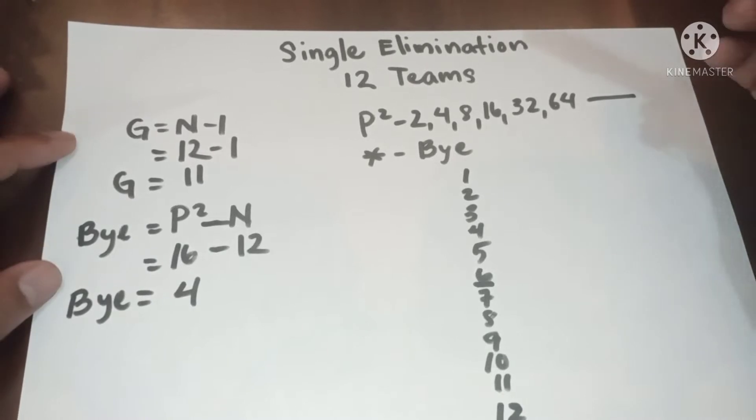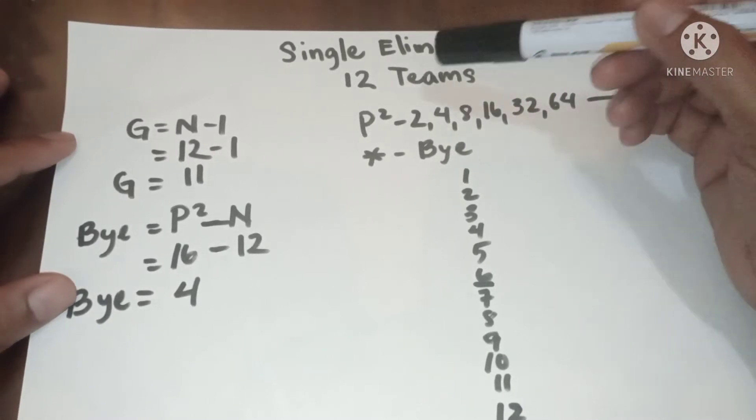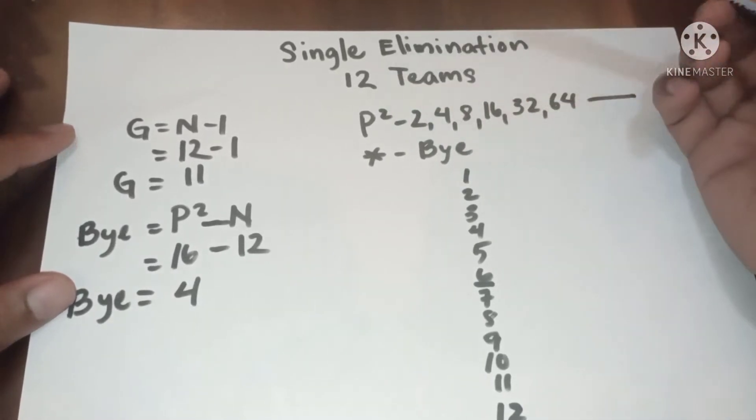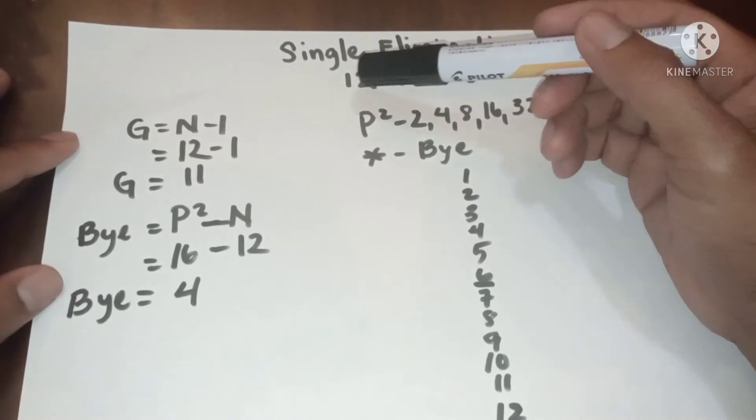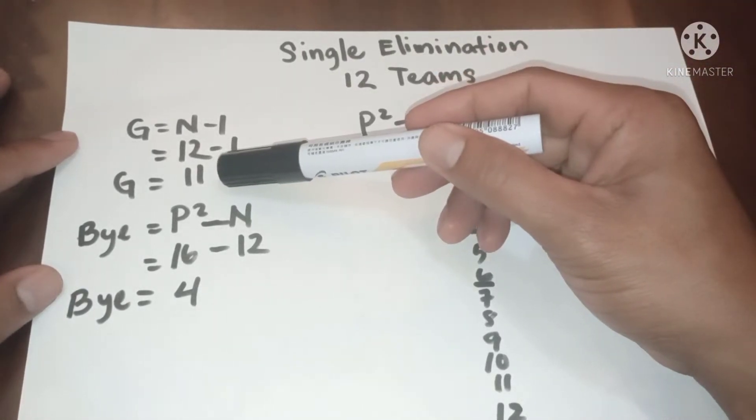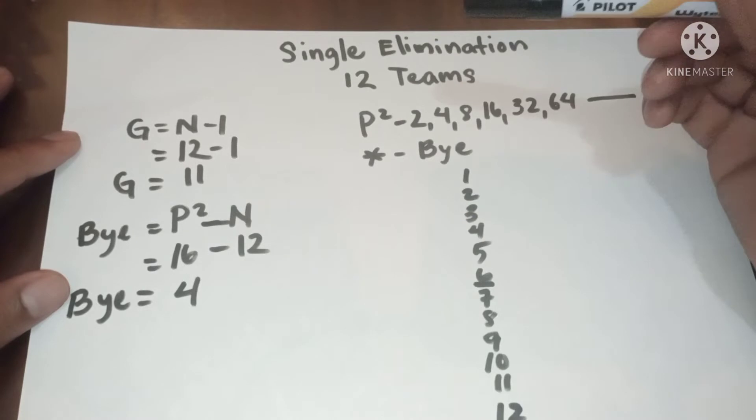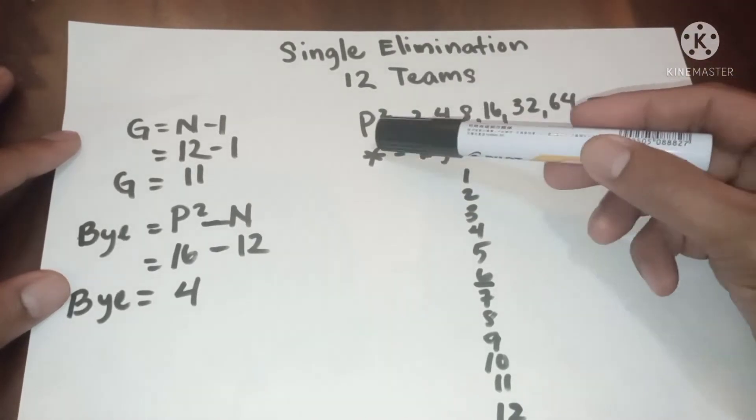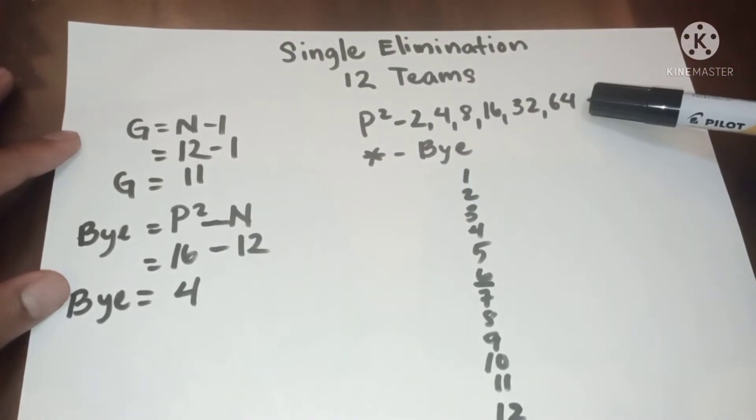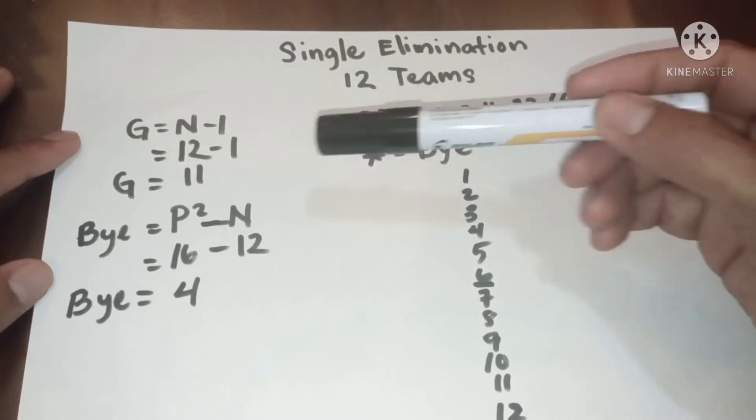Hello everyone, this is single elimination for 12 teams. In 12 teams we have 11 games. Since 12 is not included in the power of twos, meaning it has bye. To determine the bye we have bye equals power of 2 minus n.